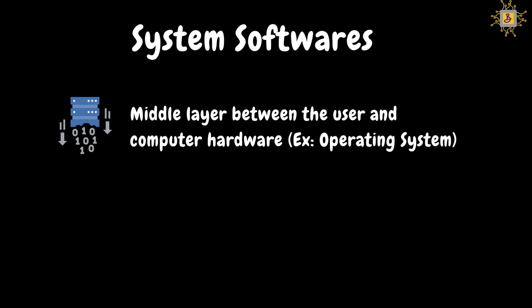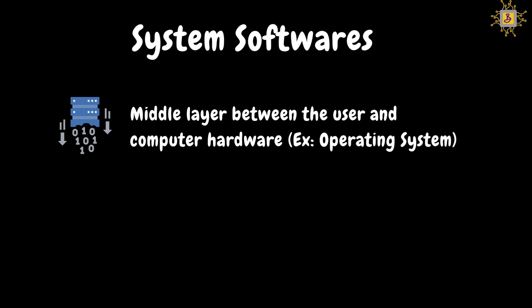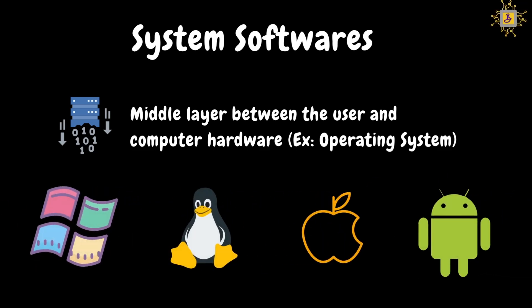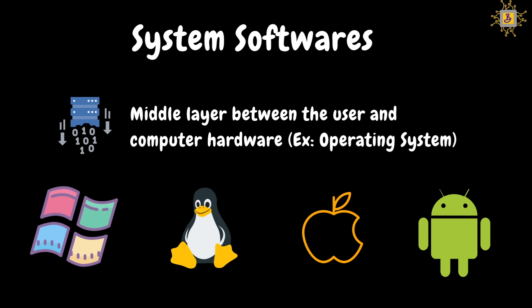So, what is system software? System software is a middle layer between the user and the computer hardware. If a user gives instructions, it will be translated into computer language. The best example of this is an operating system. On Windows platforms — laptops and desktops — you use the inbuilt Windows operating system. Many IT companies also use the Linux operating system. On Apple devices, you use the Mac operating system by default. On mobile devices, there is the Android operating system.